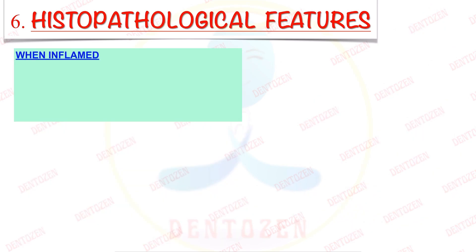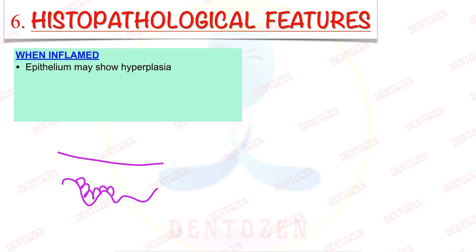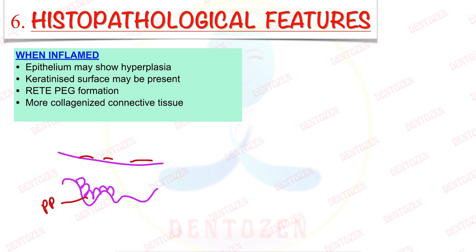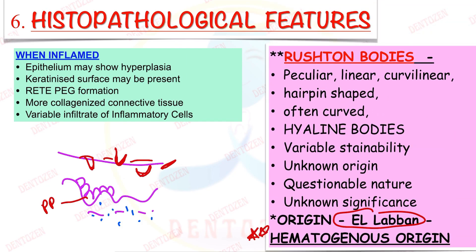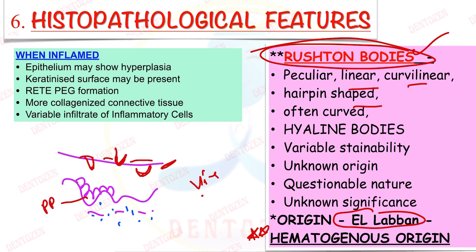When the cyst is inflamed, the epithelium becomes hyperplastic (increased cell number), may show surface keratinization and atypia, and there is more collagen deposition with inflammatory cells in the connective tissue wall. In association with inflammation, we can see Rushton bodies — hyaline bodies with a glassy, pink, homogeneous appearance in linear, curved, curvilinear, or hairpin-shaped forms within the epithelium, of hematogenous origin. Viva question: what are Rushton bodies, their shape, location, and origin?